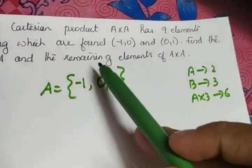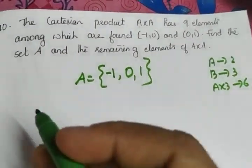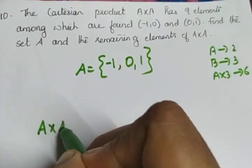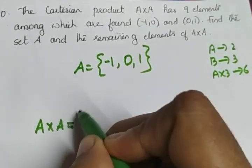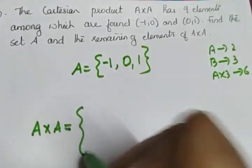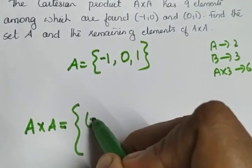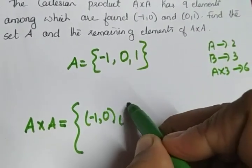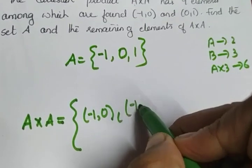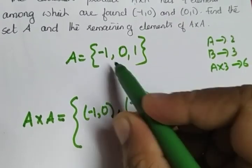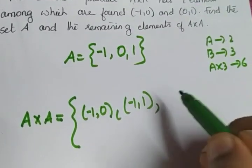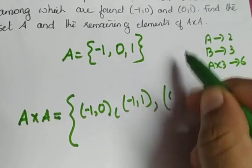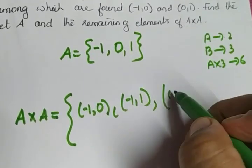There is one more part of the question: find the remaining elements of A cross A. A cross A equals {(-1,-1), (-1,0), (-1,1), (0,-1), (0,0), (0,1) ...} — we already have some of these.